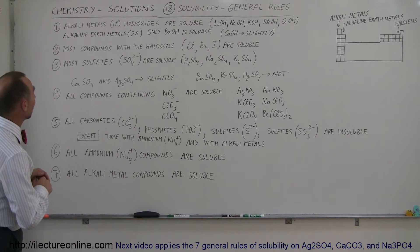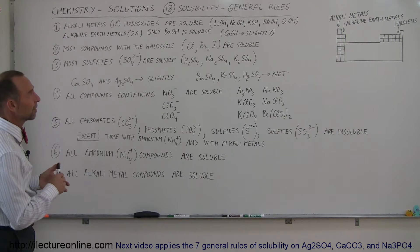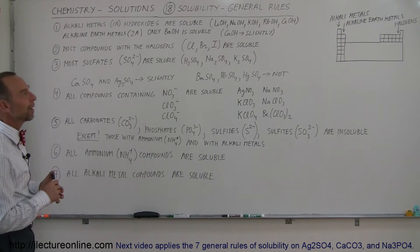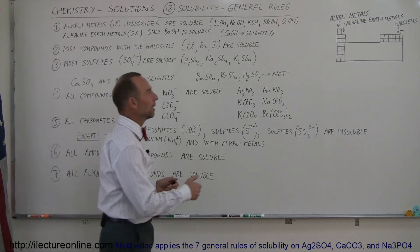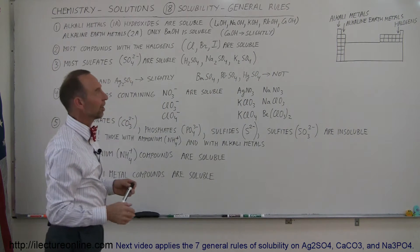So, the first one. Alkali metals hydroxides are soluble, like lithium hydroxide, sodium hydroxide, potassium, rubidium, and cesium hydroxide are all soluble. So, think of the alkali metals mixed with hydroxide, they're soluble.